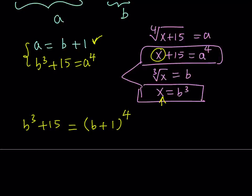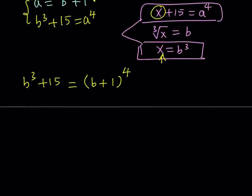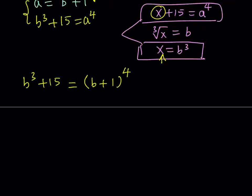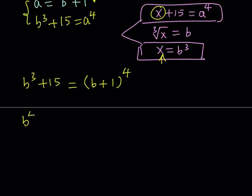Okay. Now the right-hand side is binomial theorem. So let's go ahead and expand it. Remember the Pascal's triangle, fourth row, the coefficients are 1, 4, 6, 4, 1. So the right-hand side, which I'm going to write on the left-hand side, so the right-hand side becomes the left-hand side and the left-hand side becomes the right-hand side. So that way we're going to get something like this. B to the fourth plus 4B cubed plus 6B squared plus 4B plus 1 is equal to B cubed plus 15.